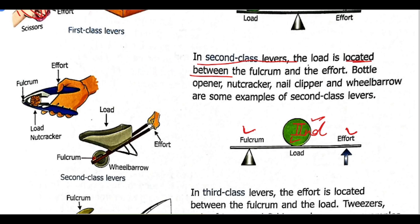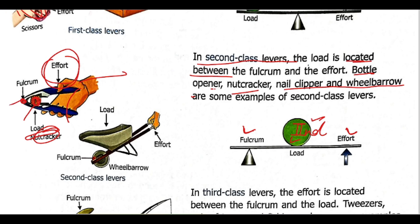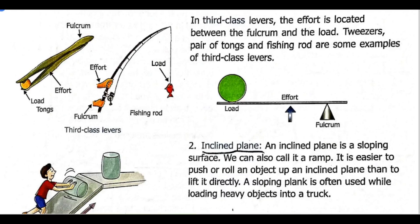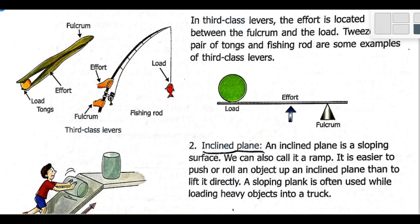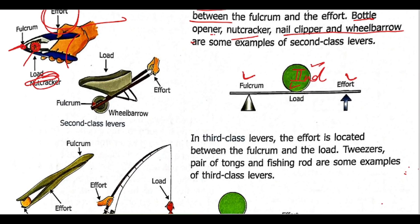You have to remember: for second class lever, the example is bottle opener and nutcracker and nail clipper. In a second class lever, the load is located between the fulcrum and the effort. The example of wheelbarrow — here the load is in the middle, effort is applied at one end, and fulcrum is at the other end.